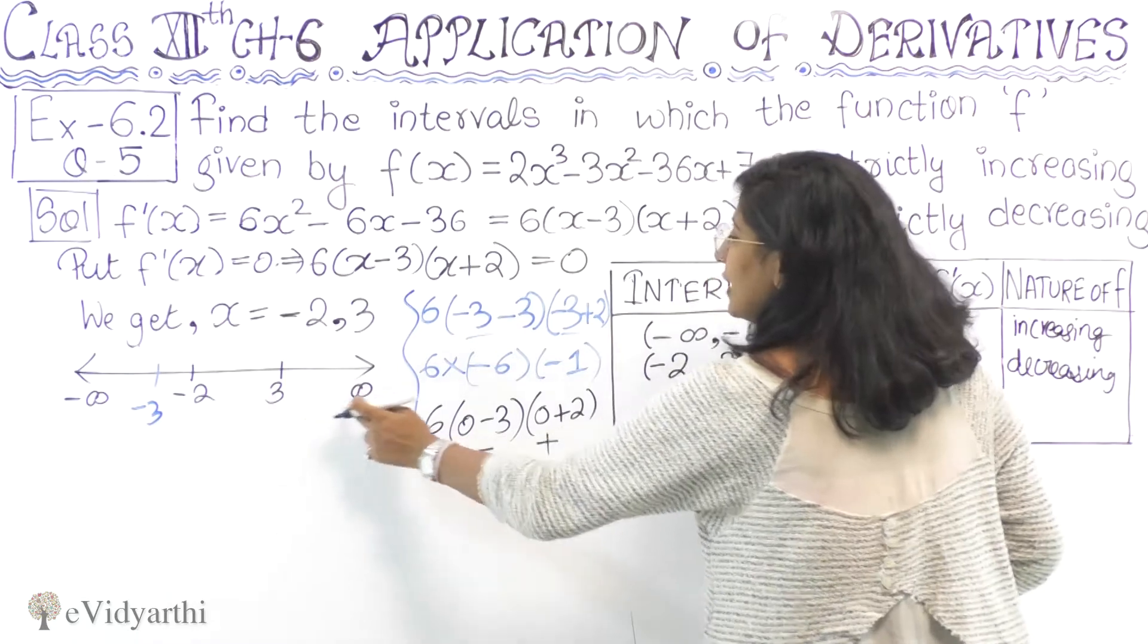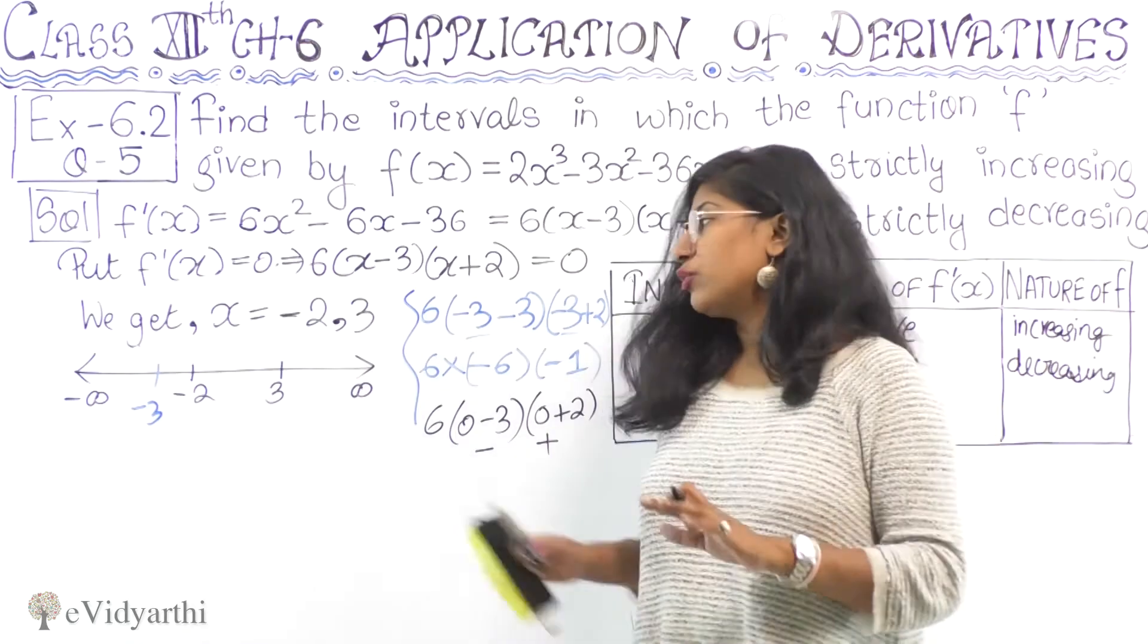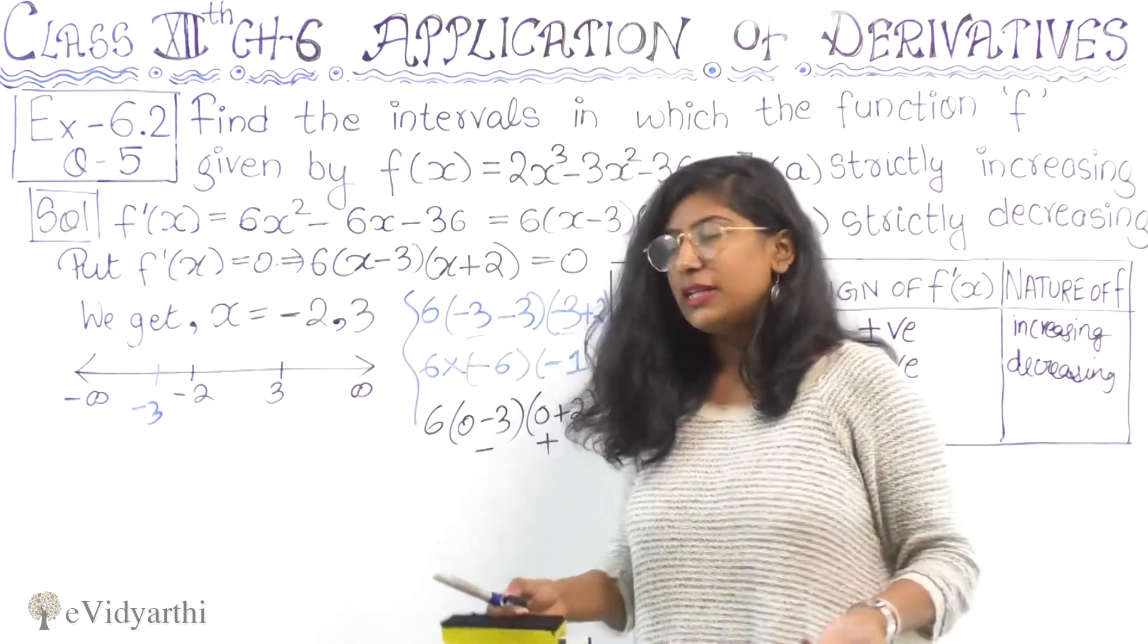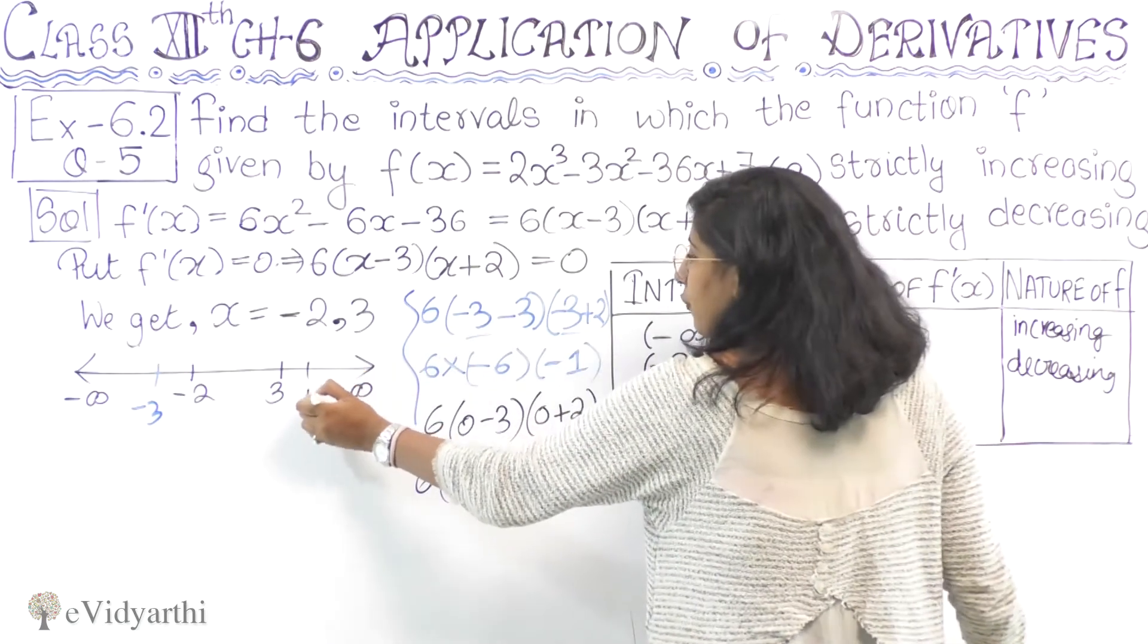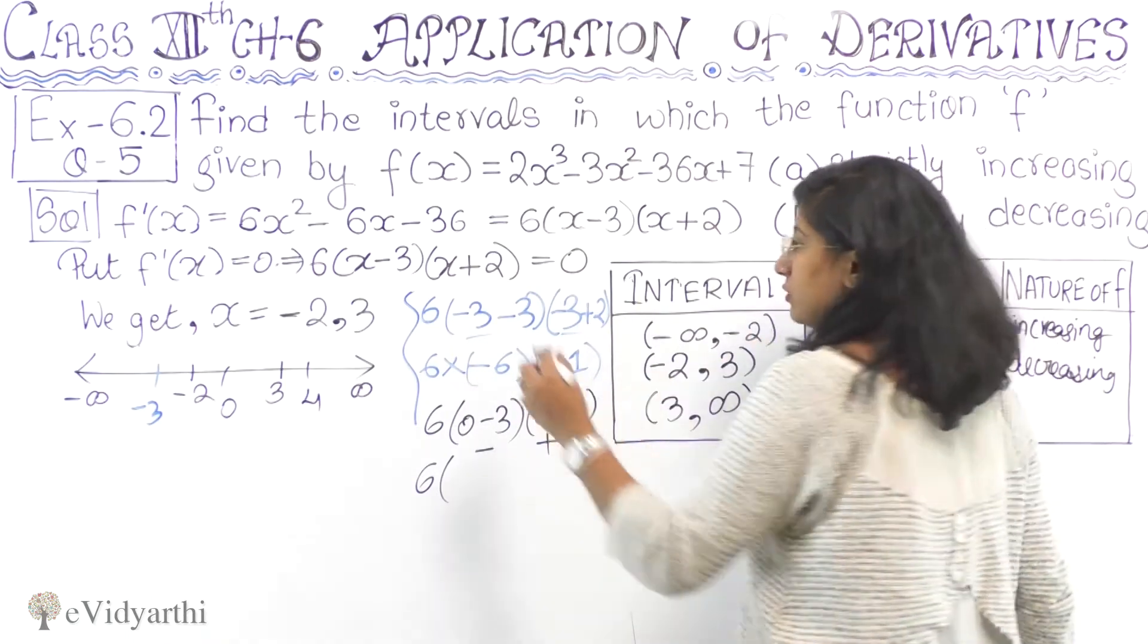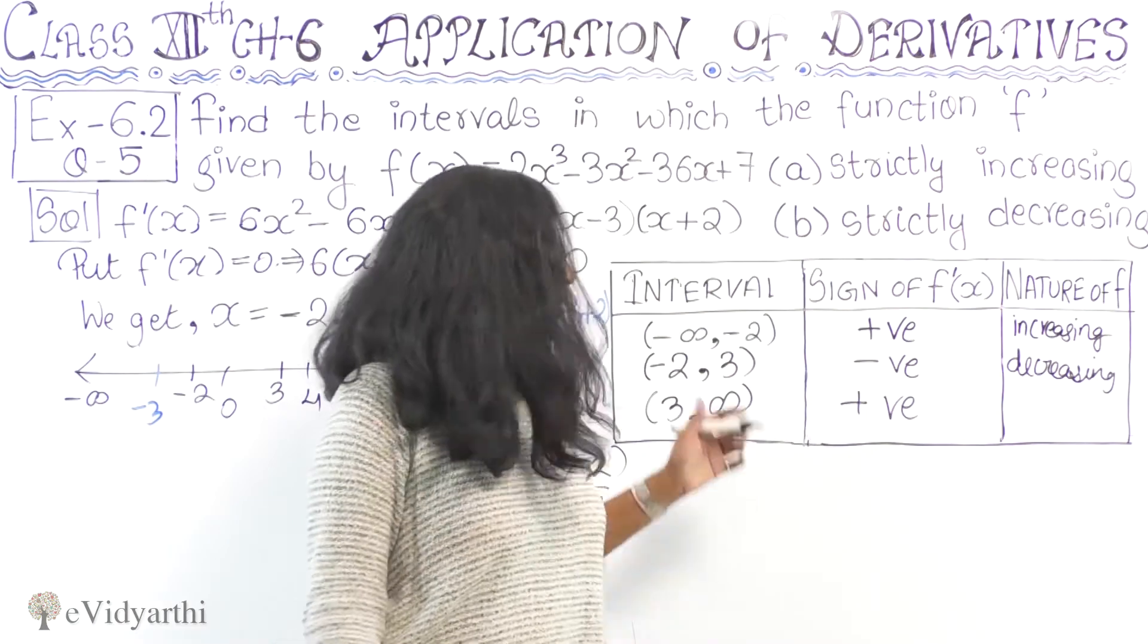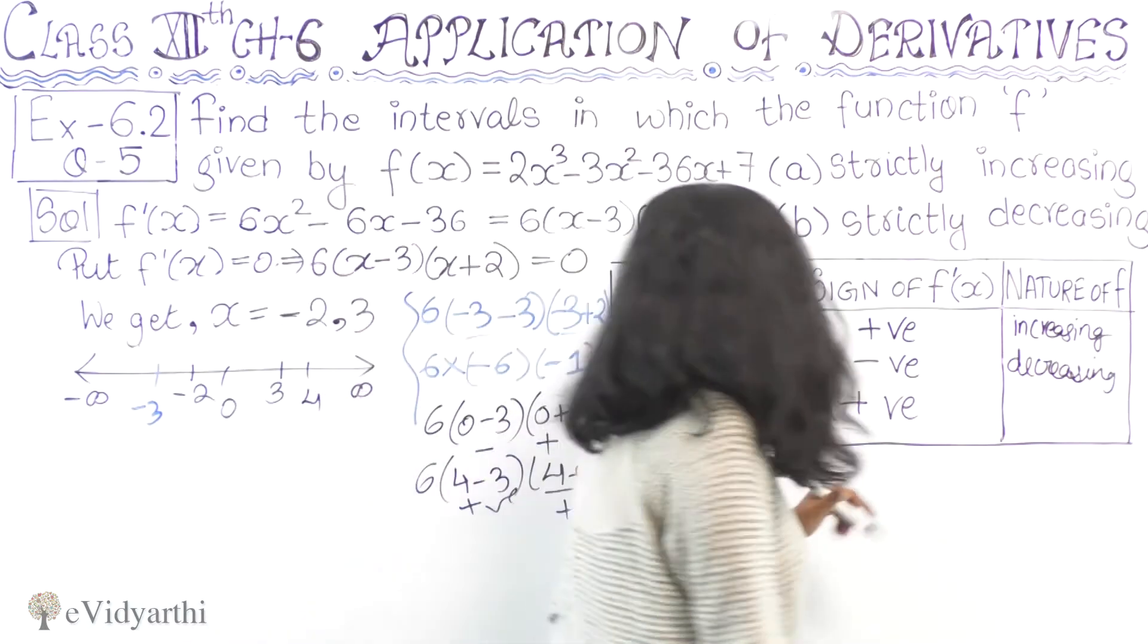For the last interval (3, ∞), let's take x = 4. We get 6(4 - 3)(4 + 2) = 6(1)(6), which is positive. The signs alternate: plus, minus, plus. So in this interval the function is increasing.